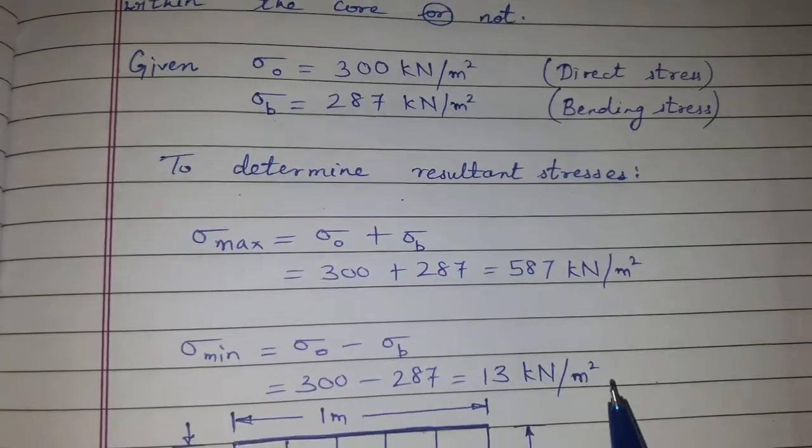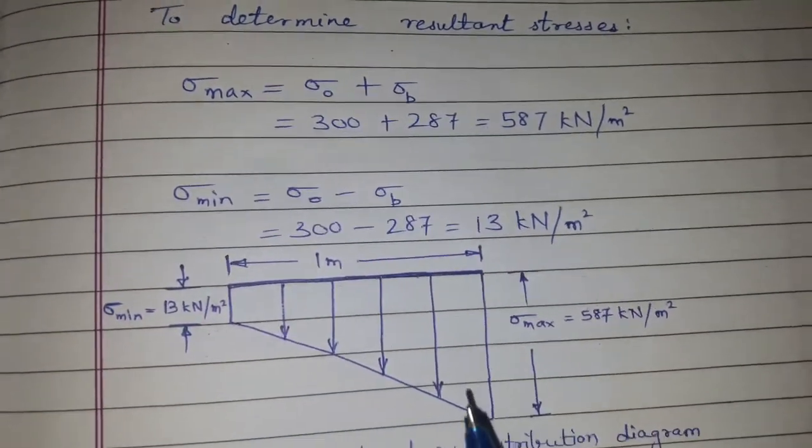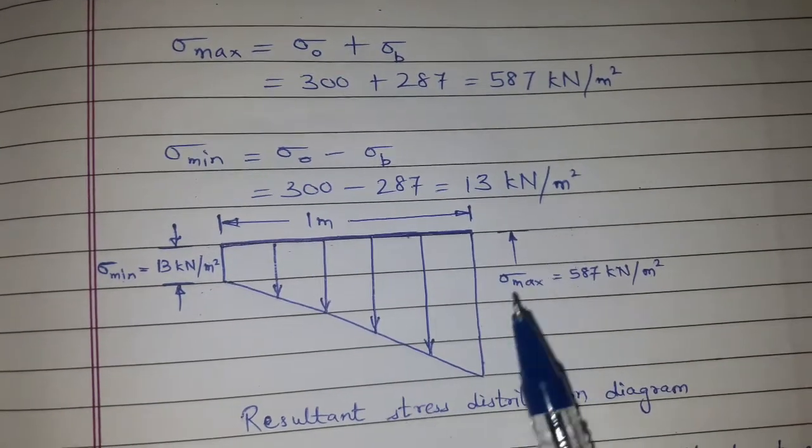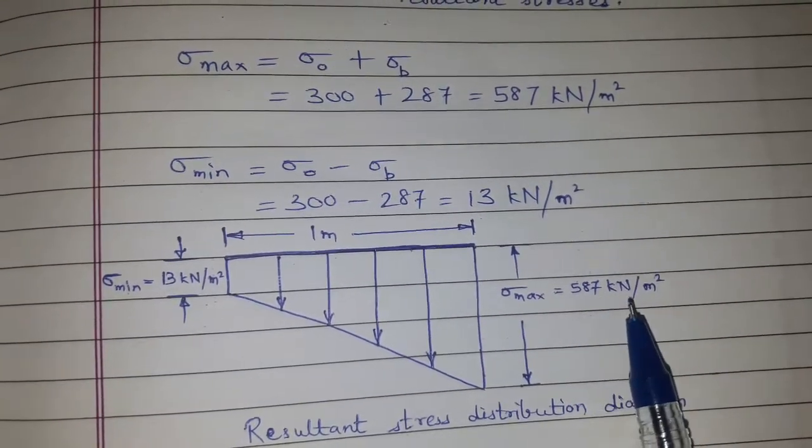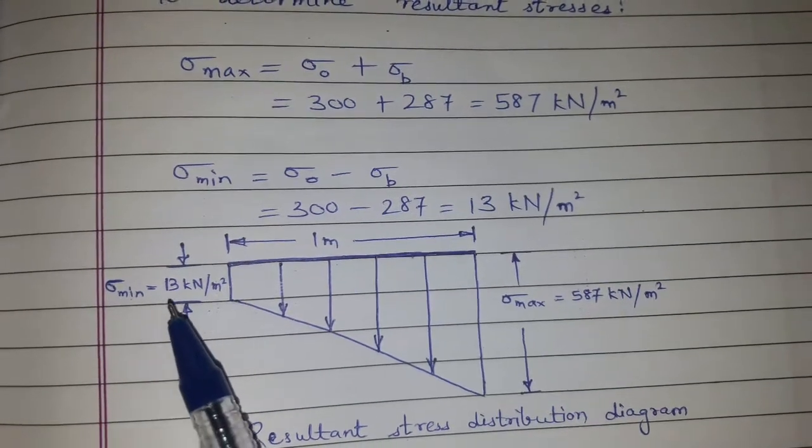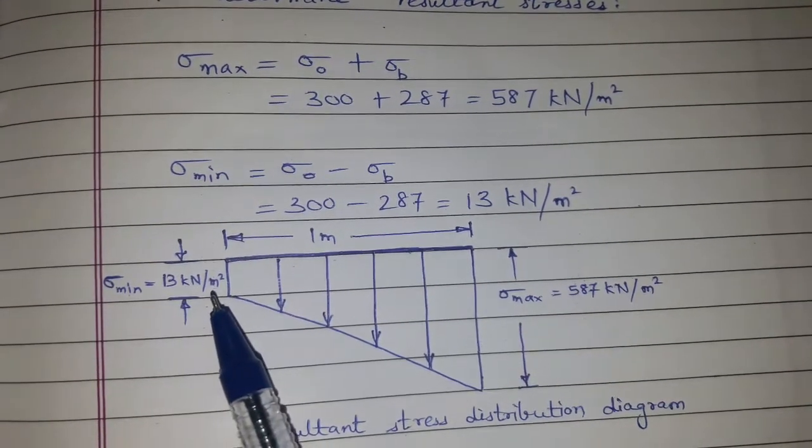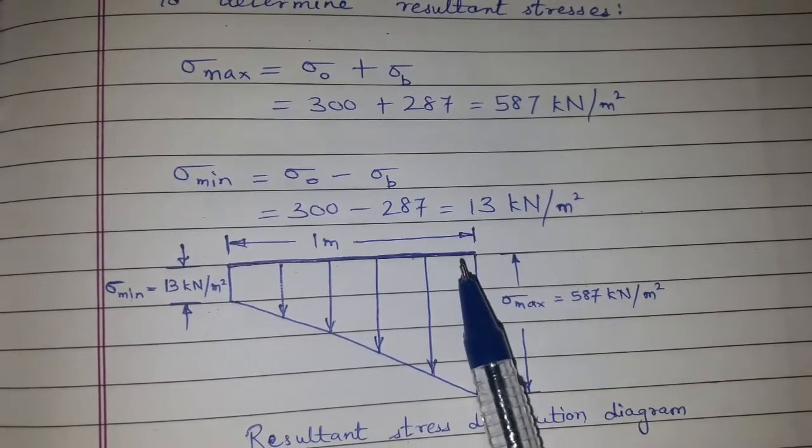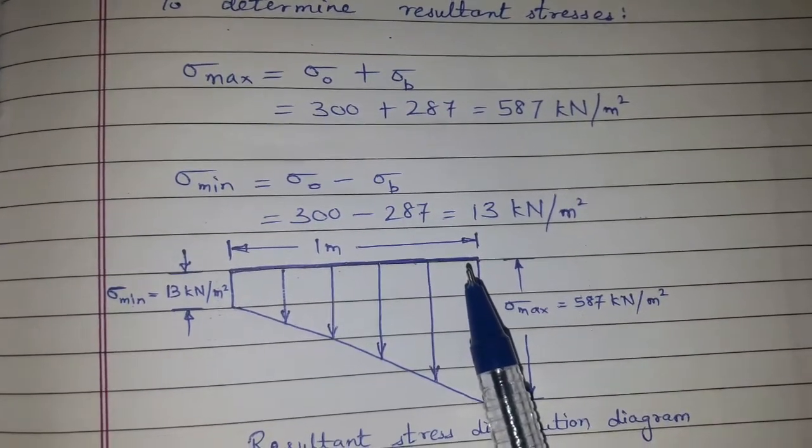When we plot this or draw this, this is the resultant stress distribution diagram. This is the sigma maximum which is 587 and this is sigma minimum that is 13 kN per meter square, and this is 1 meter which is given as the side of the square section.